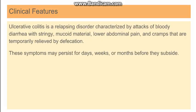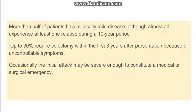Ulcerative colitis is a relapsing disorder. Symptoms include attacks of bloody diarrhea with stringy mucoid material, lower abdominal pain, and cramps that are temporarily relieved by defecation. These symptoms persist for days, weeks, or months and then subside, with a second episode following after a few years. More than half of patients have a relapse within 10 years, and around 30% will require colectomy within 3 years of presentation; the rest are managed with immunosuppressants or steroids.